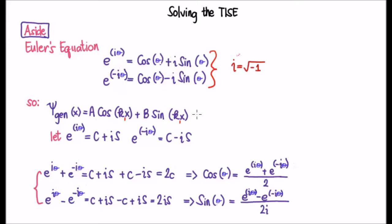We saw in a previous video that one of the general solutions to the time independent Schrodinger equation is given by a linear combination of cosines and sines. What I'd like to do is show that we can rewrite this general solution in an alternative way using complex exponential functions.